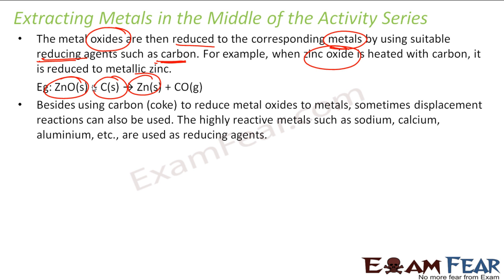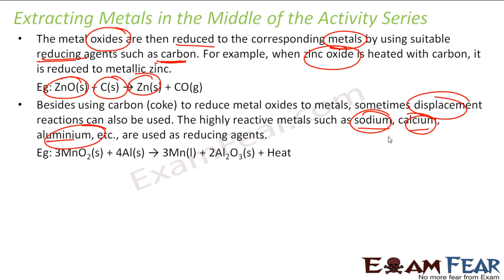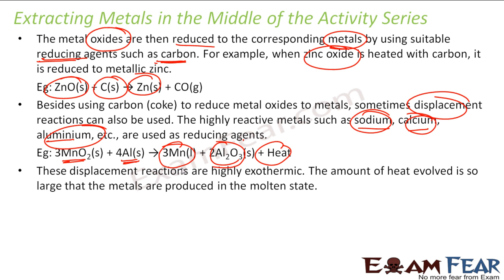In that case, we use a displacement reaction. Sometimes sodium, calcium, aluminium, etc. are used as reducing agents. For example, for manganese — you have manganese oxide, you cannot use carbon. So in that case, we will use aluminium. You get manganese out and heat is also generated. Please note that these displacement reactions are highly exothermic — the amount of heat involved is so high that the metal is produced in the molten state.